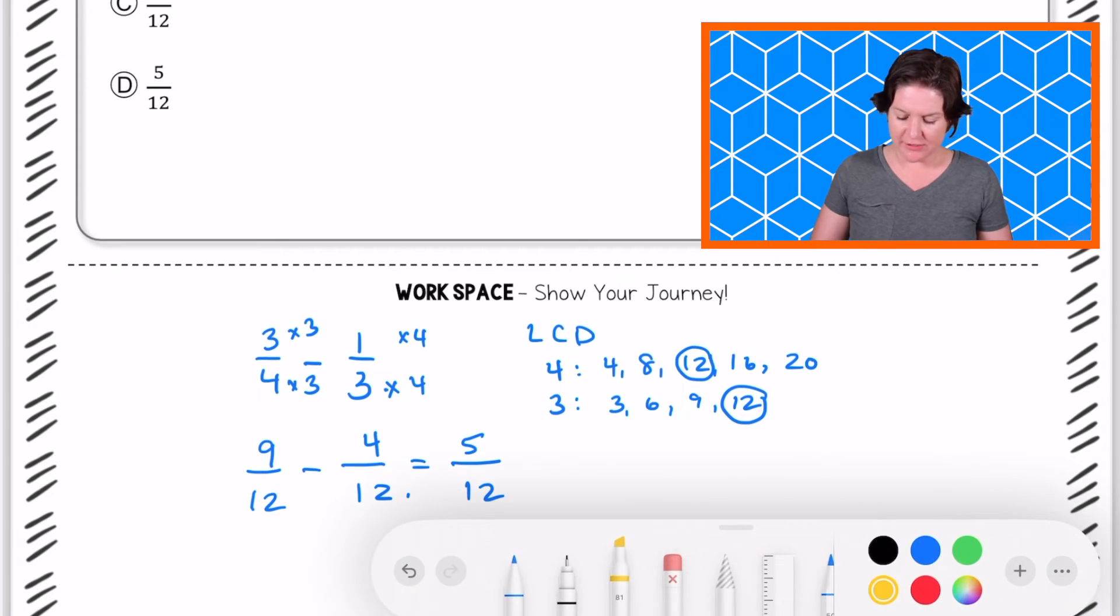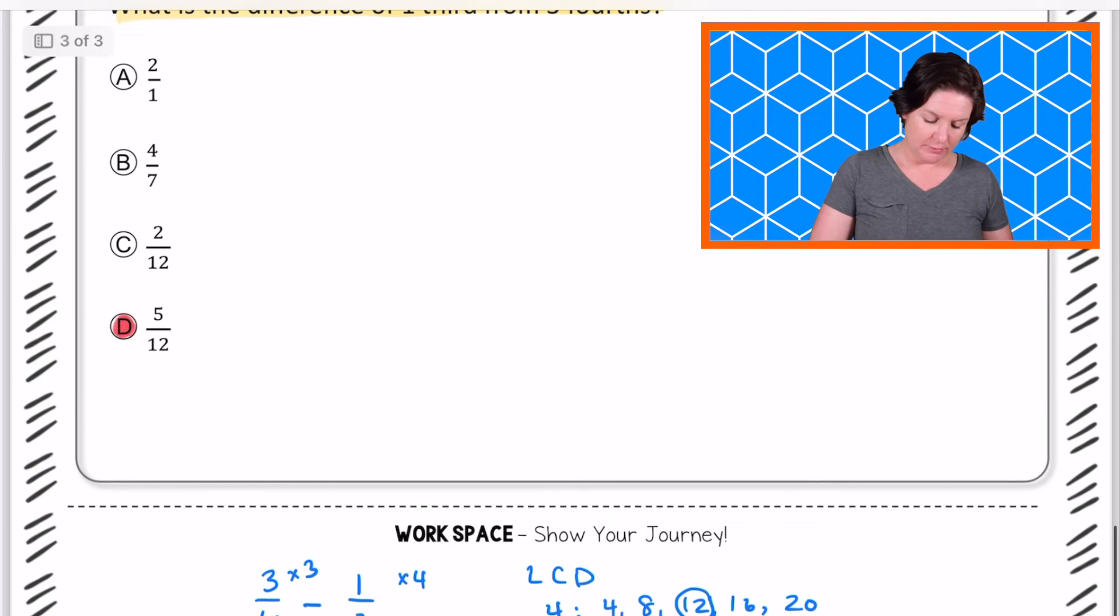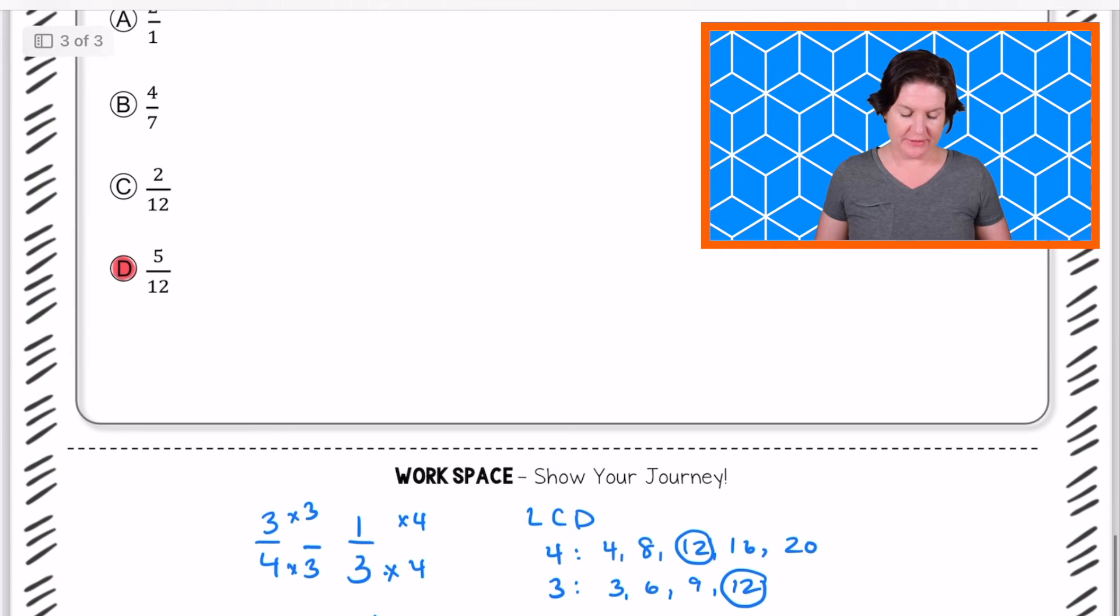Nine twelfths minus four twelfths would be five twelfths. Do we have that as an answer choice? We do. We have D. Boom. Just like that. Okay.